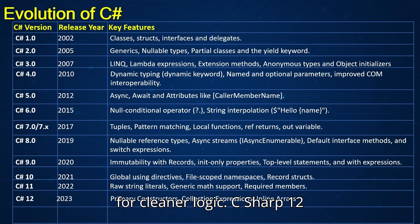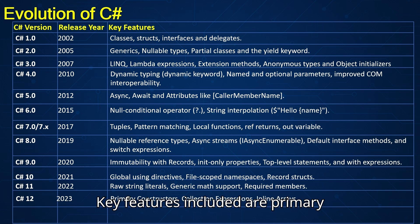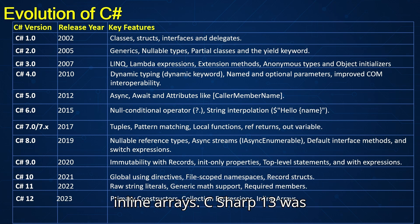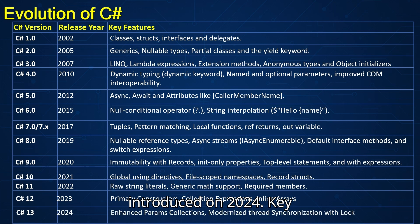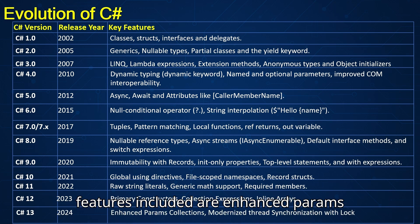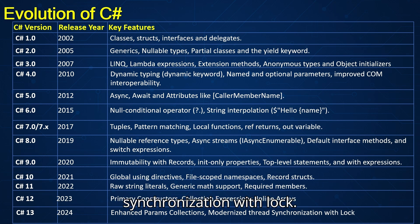C-sharp 12 was introduced in 2023 — key features included primary constructors, collection expressions, and inline arrays. C-sharp 13 was introduced in 2024 — key features included enhanced params collections and modernized thread synchronization with lock.